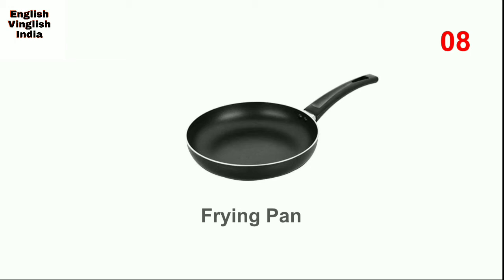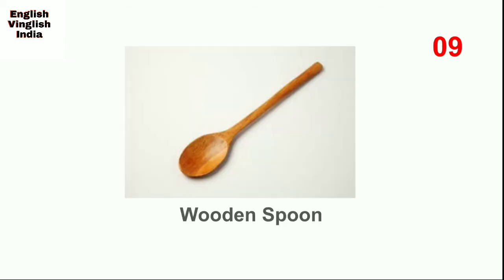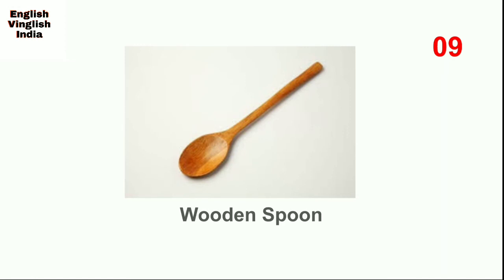Next, frying pan. A frying pan is used for shallow frying — for making omelette we use a frying pan. Next, wooden spoon. A wooden spoon is generally used for mixing ingredients for cooking or baking, and importantly it doesn't transfer heat as much as a metal spoon.